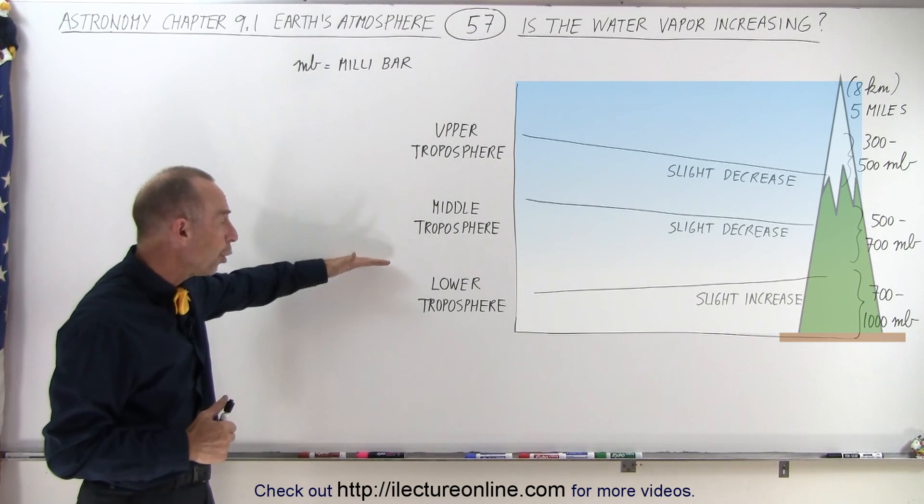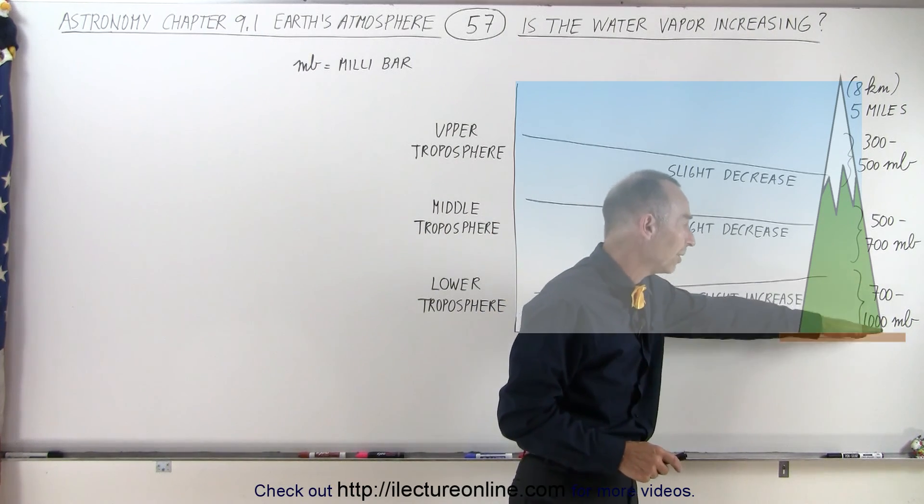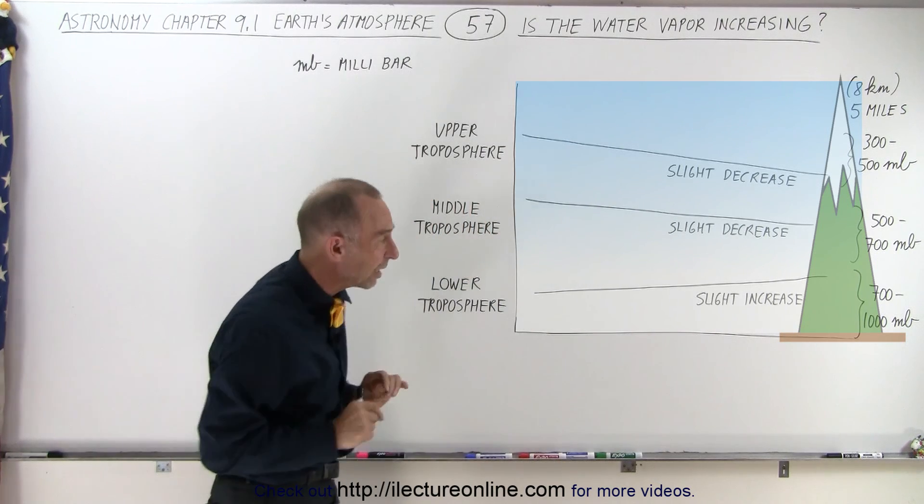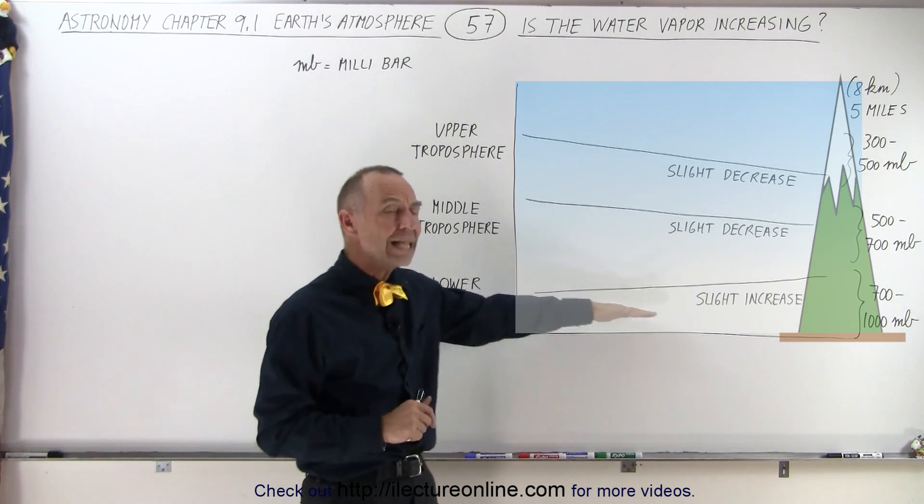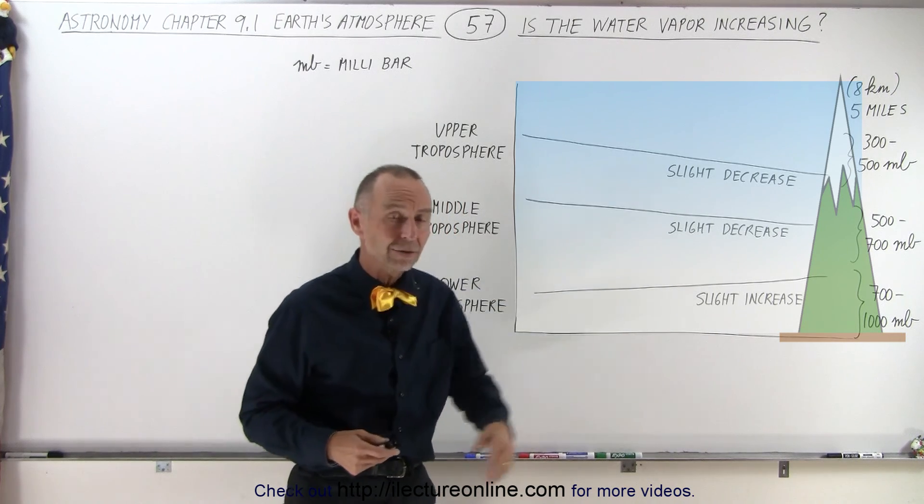At the very lower end of the troposphere, where the atmospheric pressure is somewhere between 700 and 1000 millibar, this is pretty well the layer where most of us live, there's been a slight increase in the moisture in the water vapor in the atmosphere. So that seems to bear out.